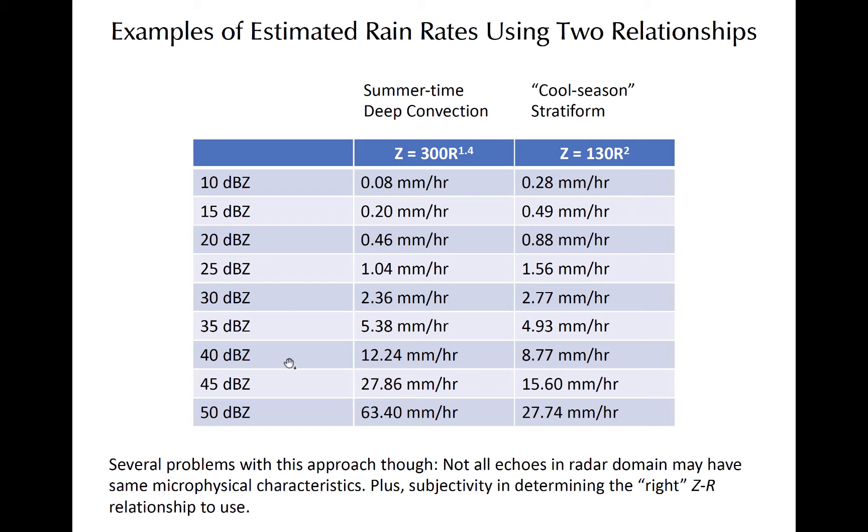A 40 dBZ echo in deep summertime convection in a moist environment will have a larger rain rate than the same echo in a region of gentler ascent, so the dynamics that are tied to the reflectivity are important.